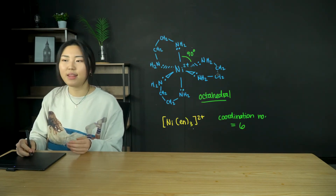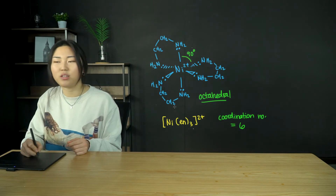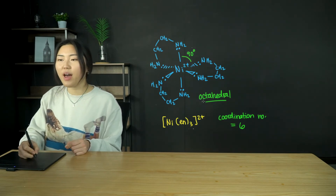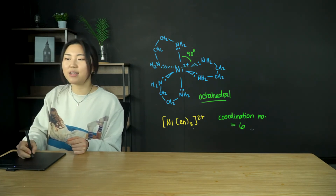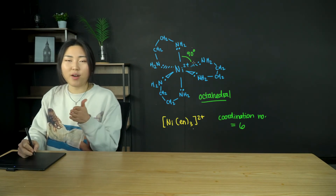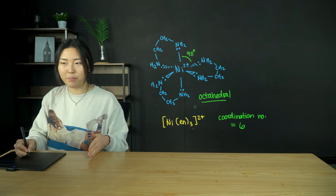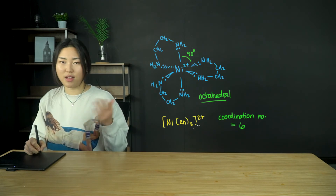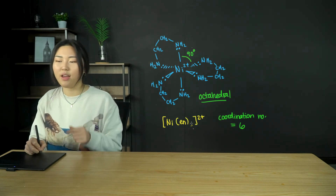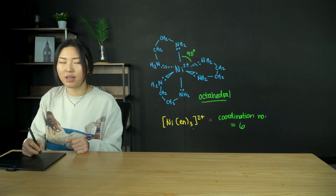Another example uses 1,2-diaminoethane (en). You can draw it showing the full structure or use a skeletal formula. There are six bond pairs around the central metal ion, giving a coordination number of six and an octahedral shape with bond angles of 90 degrees. The chemical formula is [Ni(en)3]2+, with the charge outside the square brackets since it represents the overall ion, and three 'en' ligands because there are one, two, three ligand molecules.